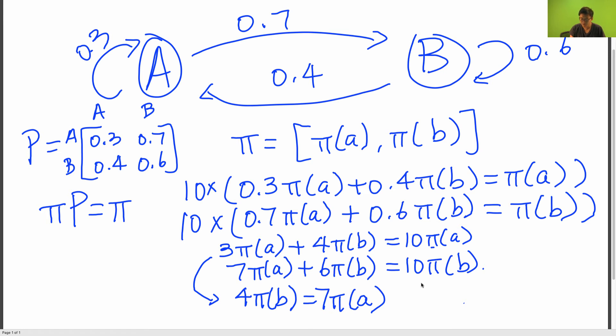And then I'm going to do the same for this equation. I'm going to move the 6 pi B over to the right side. So I'm going to get 7 pi A is equal to 4 pi B.